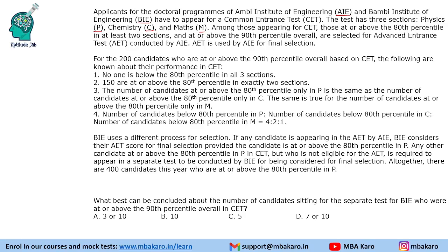There are two institutes, AIE and BIE. AIE uses this test called AET. We are given that the cutoffs are 80th percentile in at least two sections and at or above 90th percentile overall. We just need to understand: when it says 80th percentile, that means sectional cutoff, and whenever it says 90th overall, that is the overall cutoff.